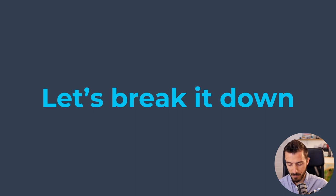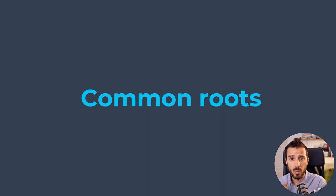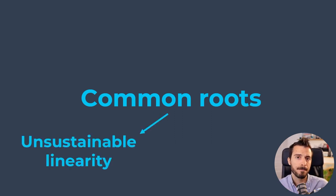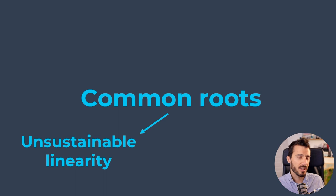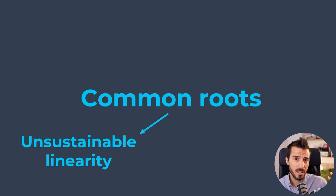In this video, I want to show you that there are some common elements and some divergent elements when it comes to circular economy. Let me break it down. First, what are the common roots — things that most researchers, policymakers, and practitioners agree on — and then we'll dive deeper into the divergent pathways. Starting with the common roots: everyone agrees that the current linear system, going from extraction to manufacturing to use to discarding waste, is unsustainable today.